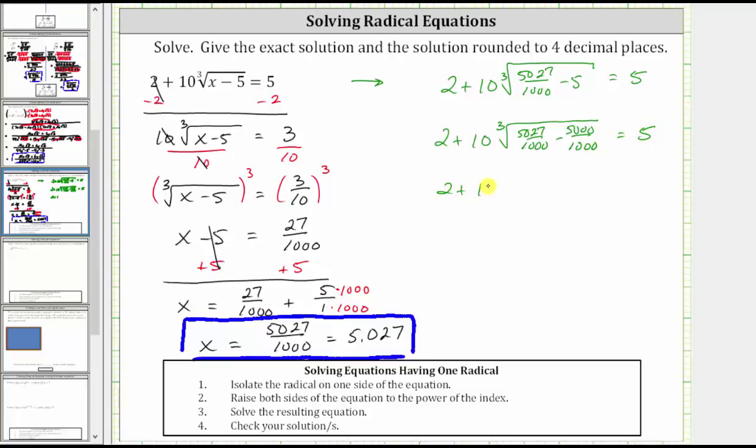This gives us two plus 10 times the cube root of, this difference is just 27 over 1000. Now remember, 27 over 1000 is equal to the cube of 3 over 10.